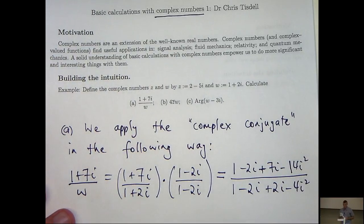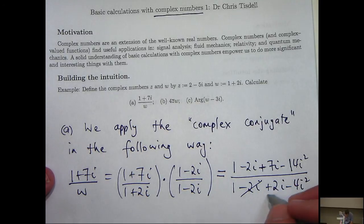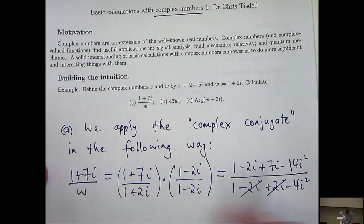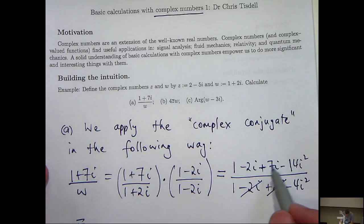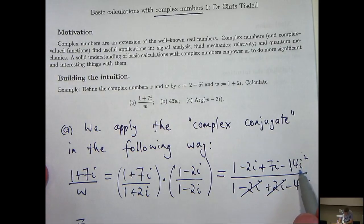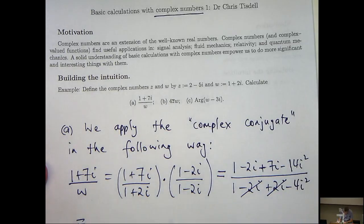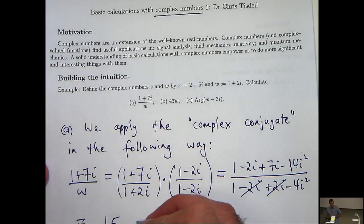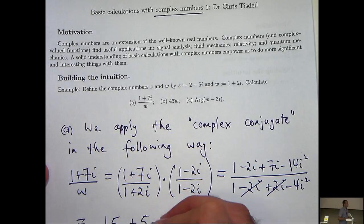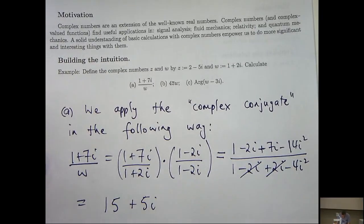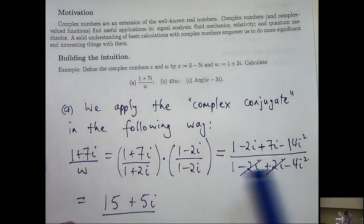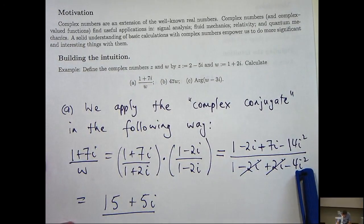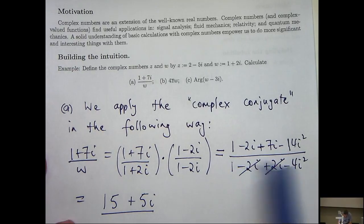So we get something like this. Now I can cancel these terms off down here. I can add the like terms up here and remember that i squared equals negative 1. So for example minus 14i squared is going to turn into positive 14. Now on the bottom I have 1 minus 4i squared. i squared is negative 1. So I am going to have 1 plus 4.